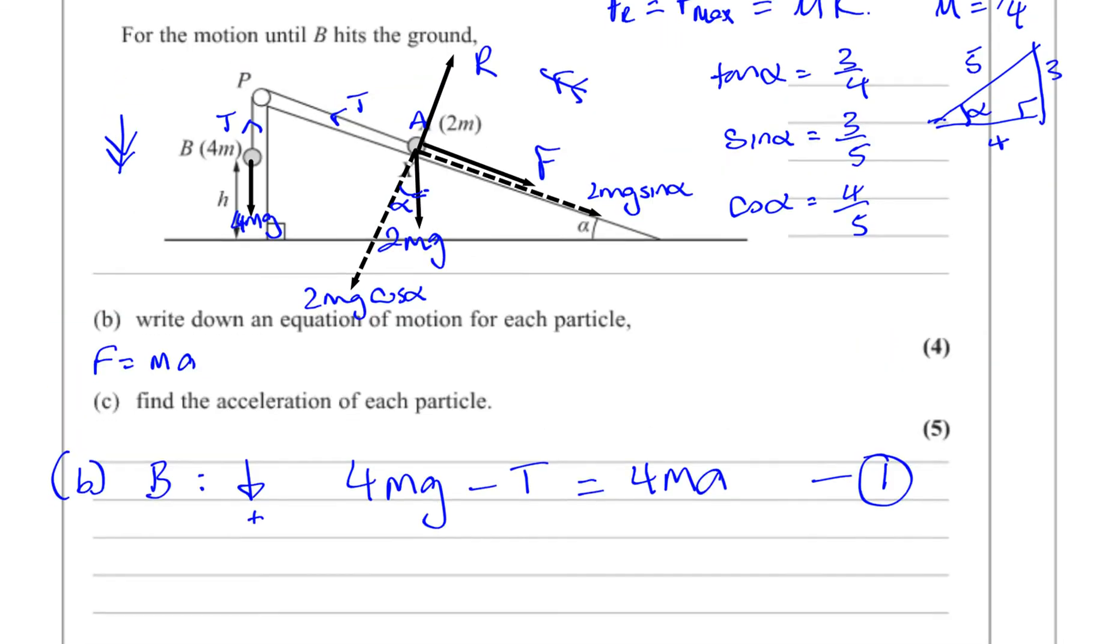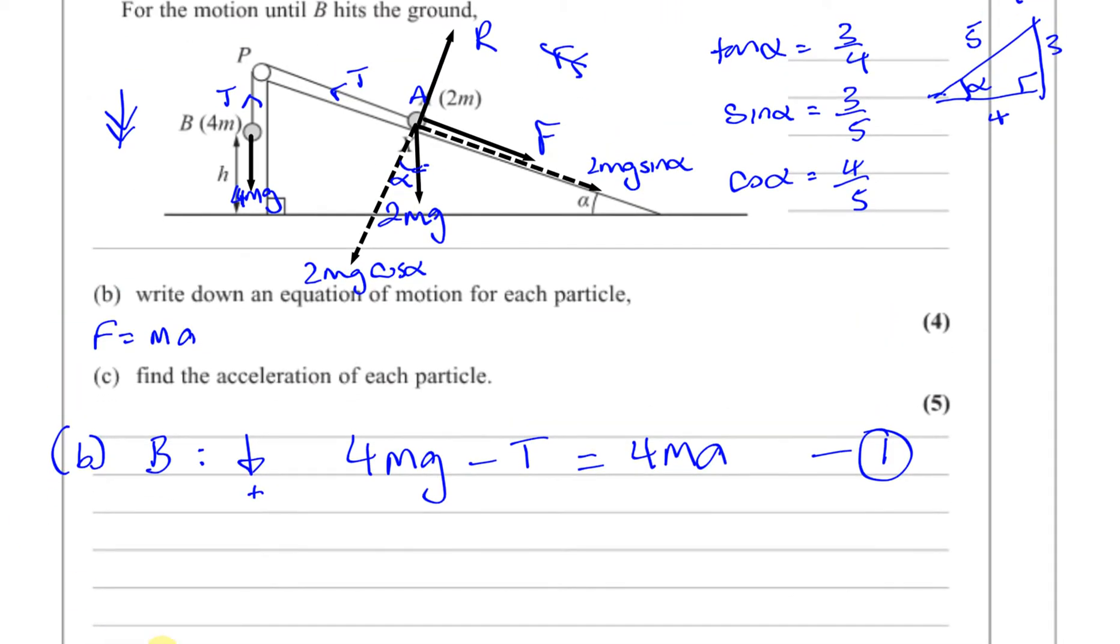And for particle A, I'm going to resolve going up the plane, taking that side as positive. So I've got T minus 2mg sin alpha minus friction equals its mass, which is 2m, times its acceleration, which is the same as this acceleration, which is A. So these are the two equations of motion which I've formed, which I'm going to now use to find the acceleration of each particle. That's enough for us to get these marks for part B.